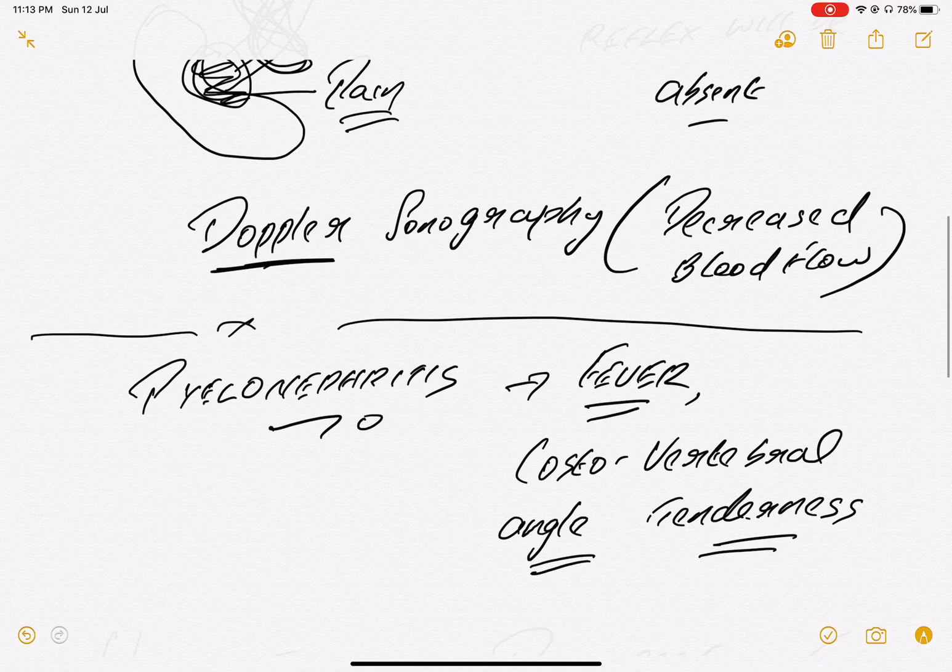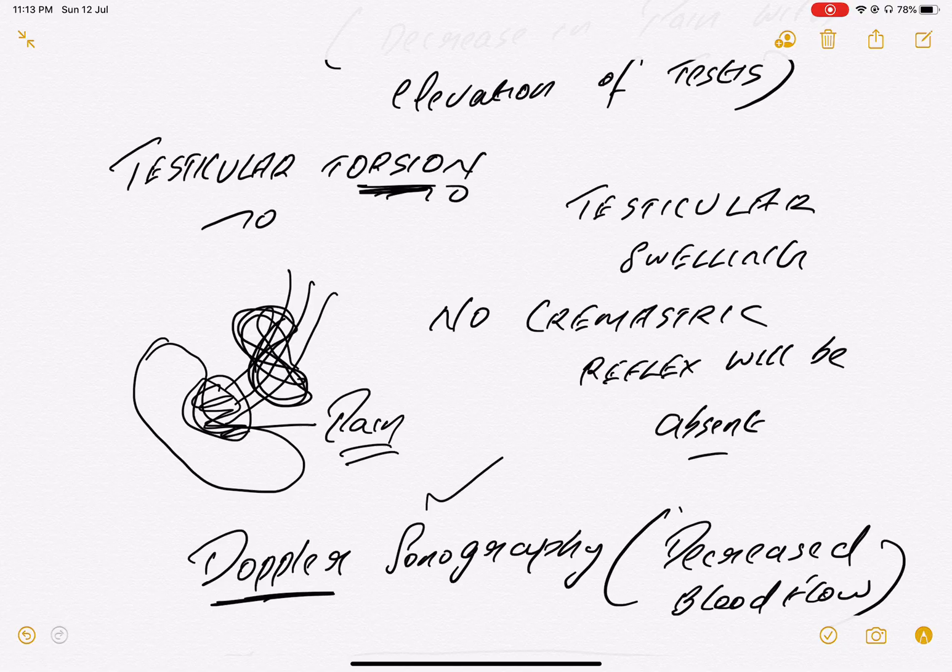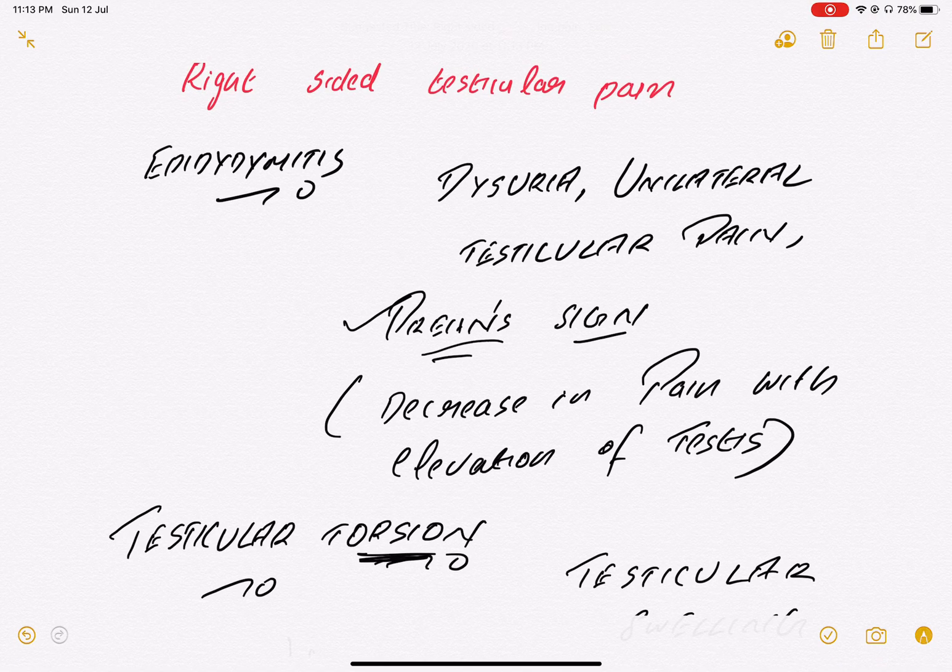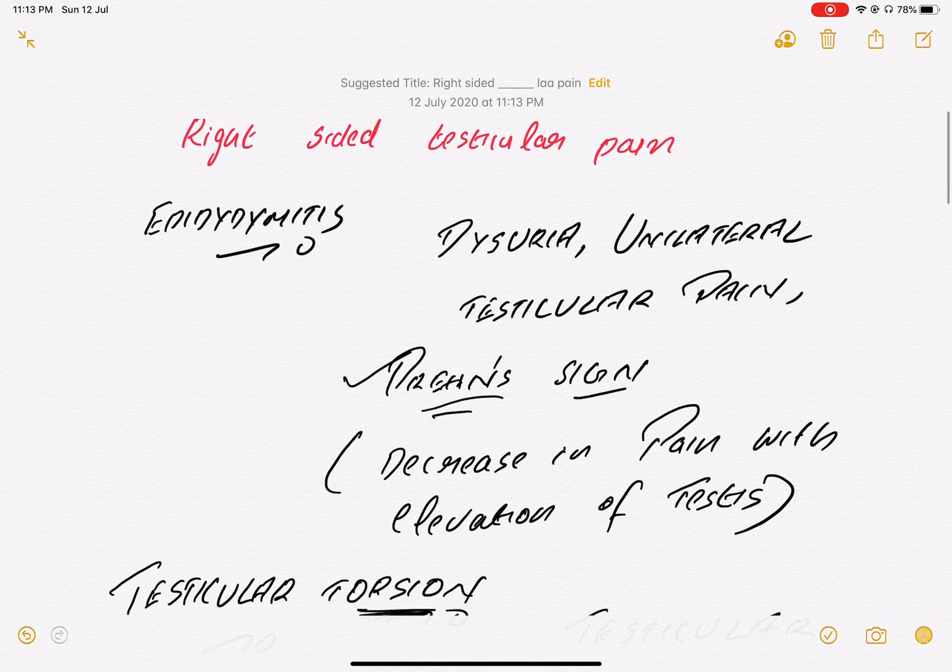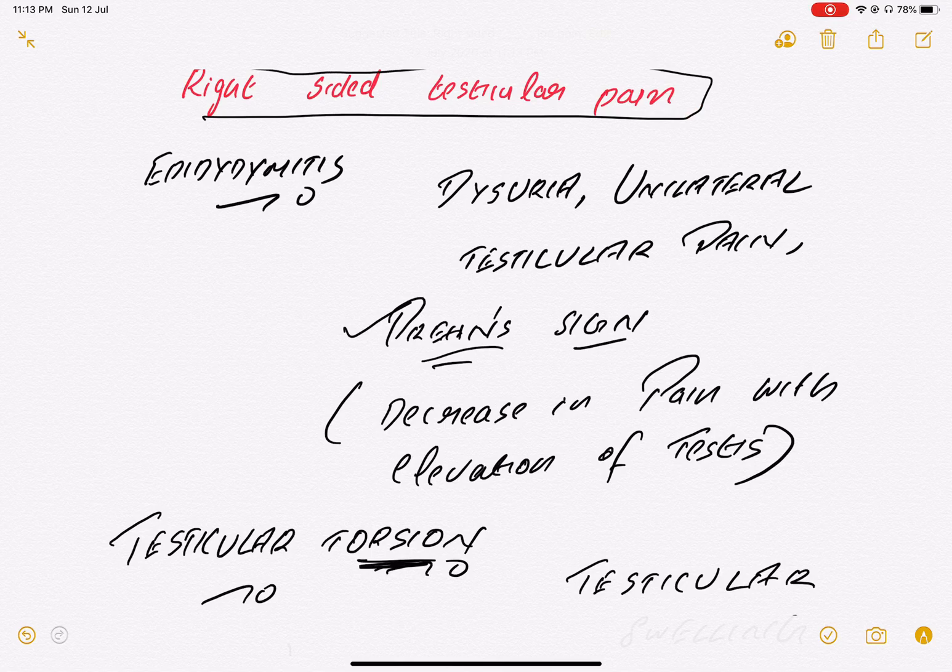So once again, right-side testicular pain can be urethritis. Go for these buzzwords in the question. Pyelonephritis: fever for sure. Remember testicular torsion: Doppler is very important, decreased blood flow you can see. And epididymitis: remember Prehn's sign, decrease in pain by elevating testis. So that's all about right-side testicular pain differential. From the last question, it's not only kidney stone, it can be any of these options. I hope all are clear. Thank you.